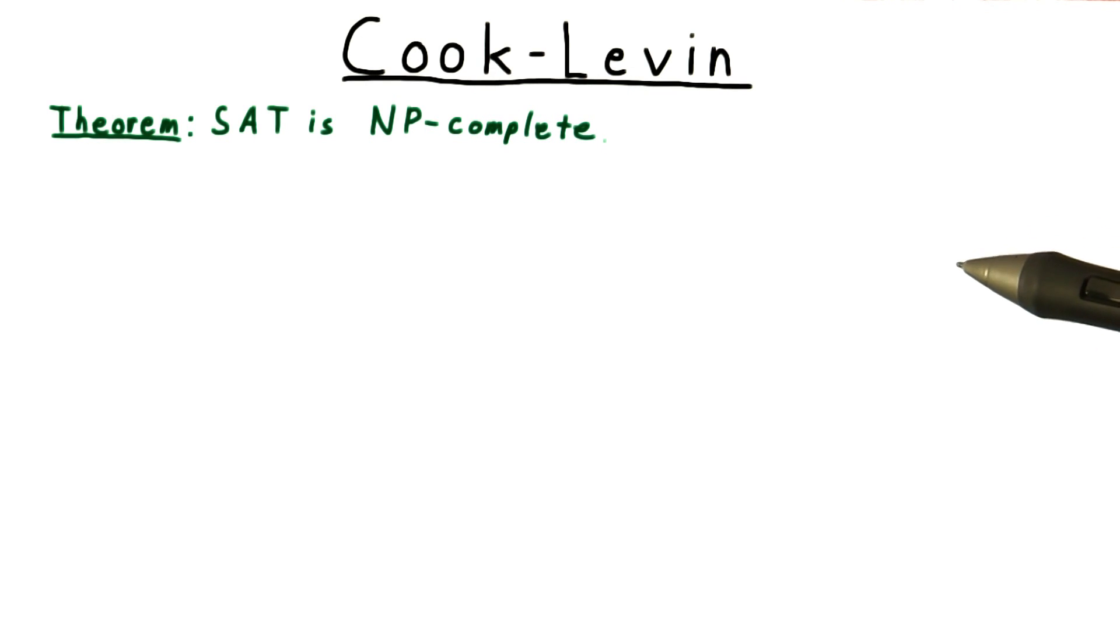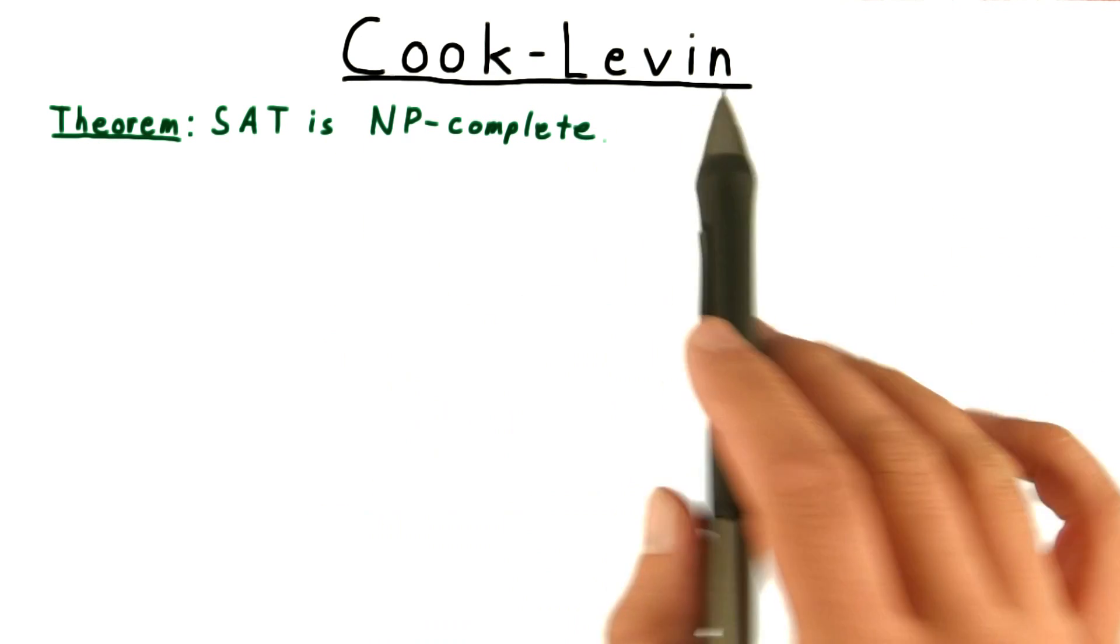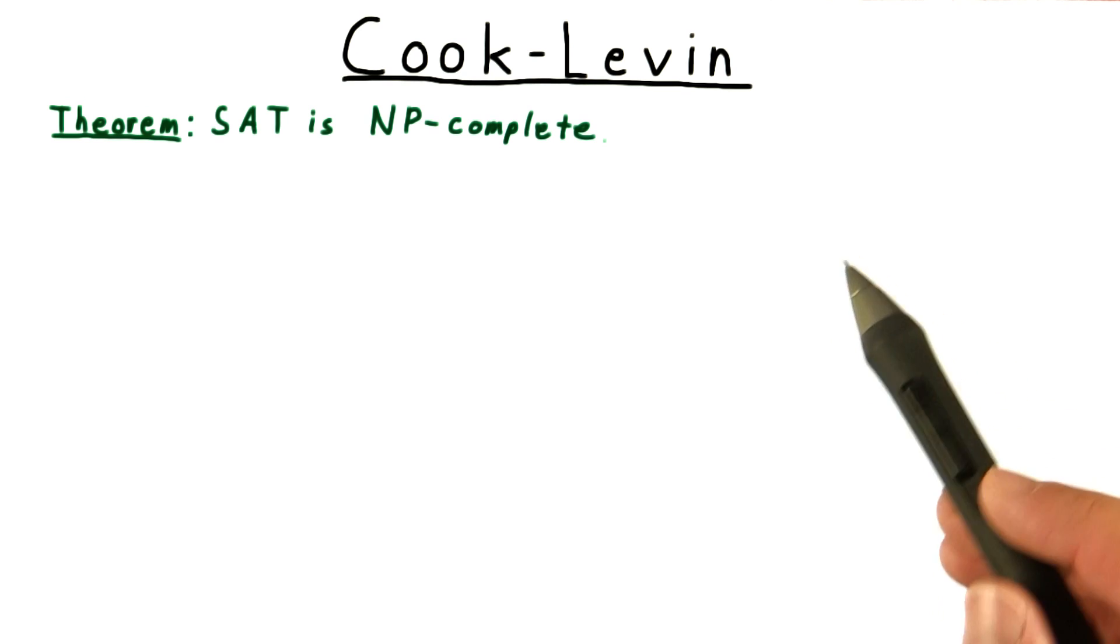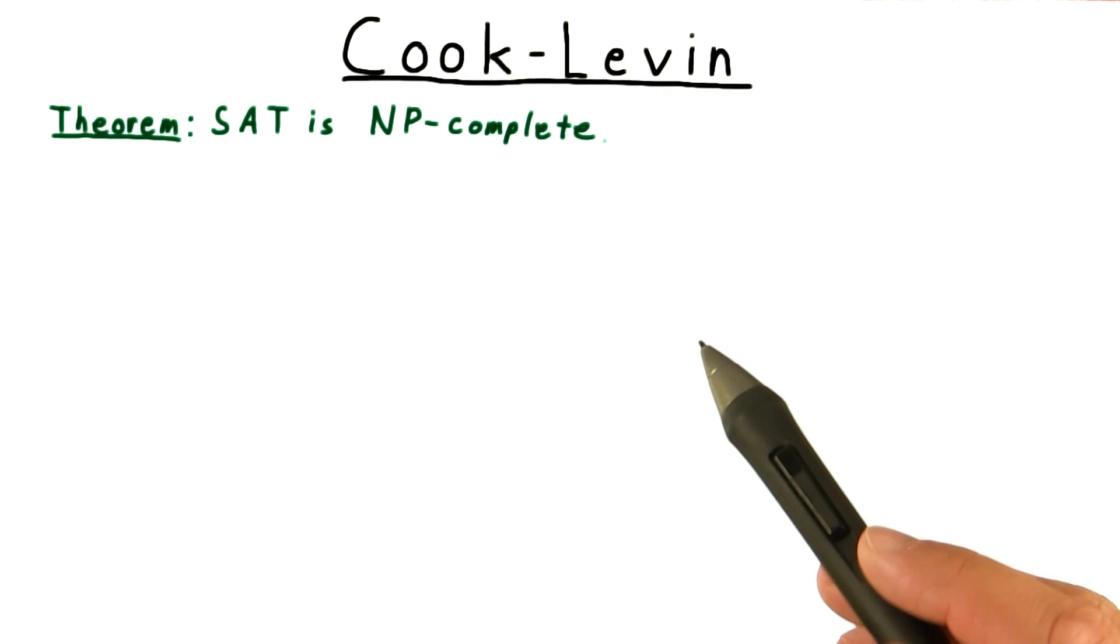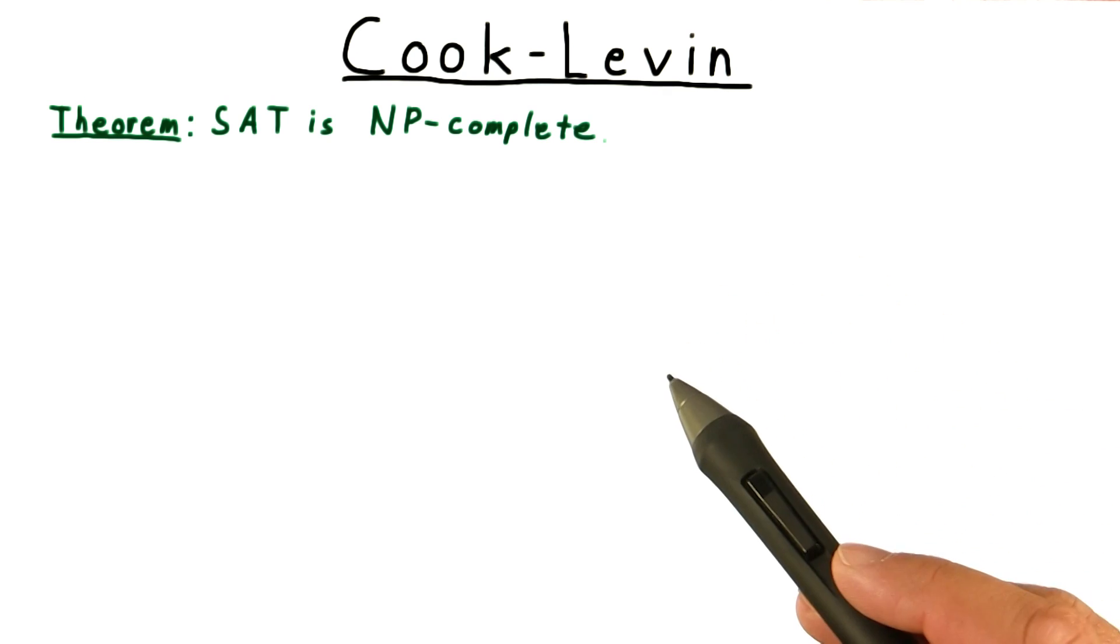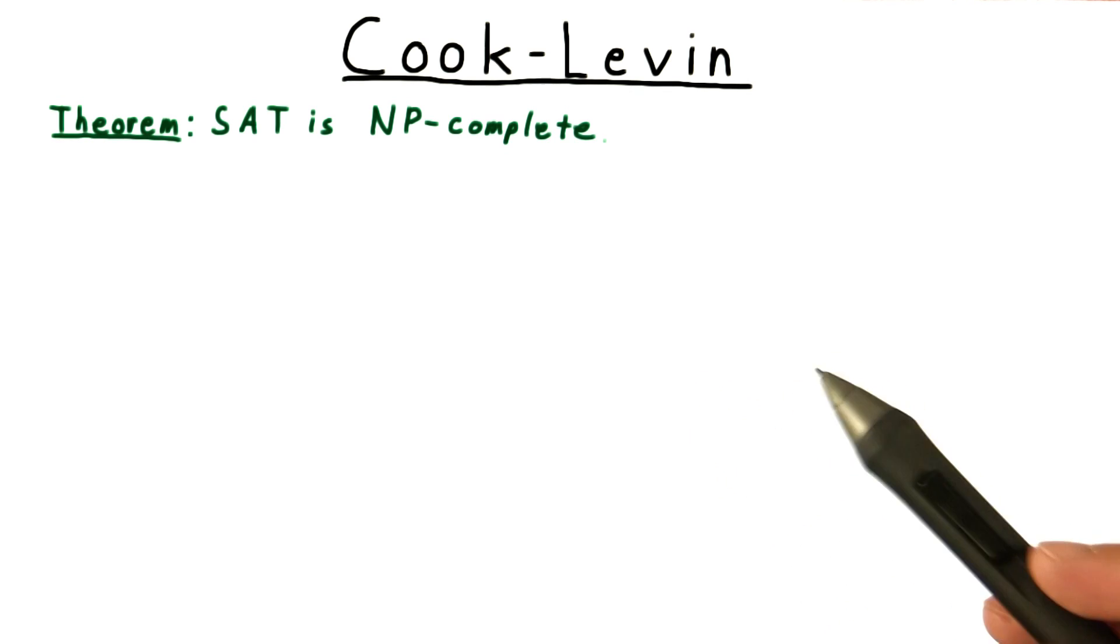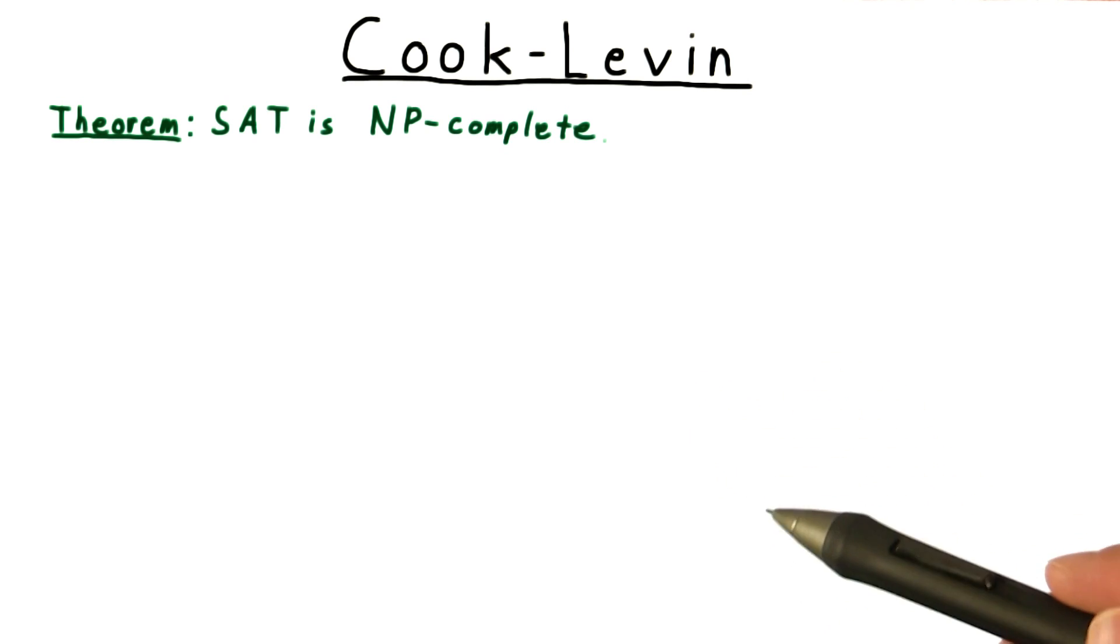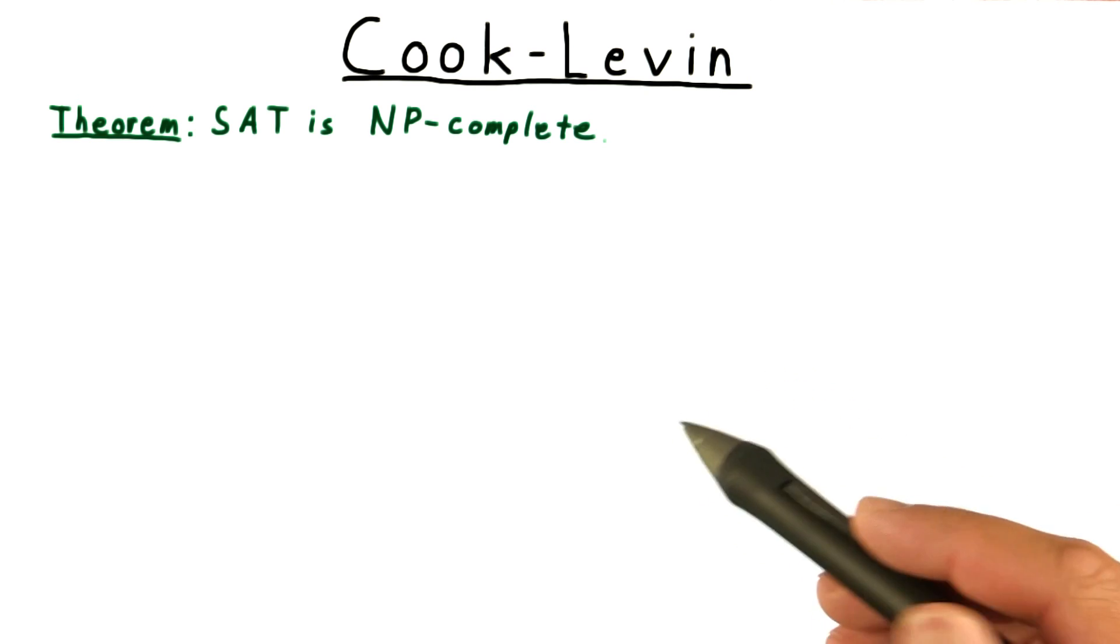Now that we've understood the satisfiability problem, we're ready to tackle the Cook-Levin theorem. Remember that we have to turn any problem in NP into an instance of SAT. So it's natural to start with the thing that we know all problems in NP have in common: there's a non-deterministic machine that decides them in polynomial time. That's the definition after all.